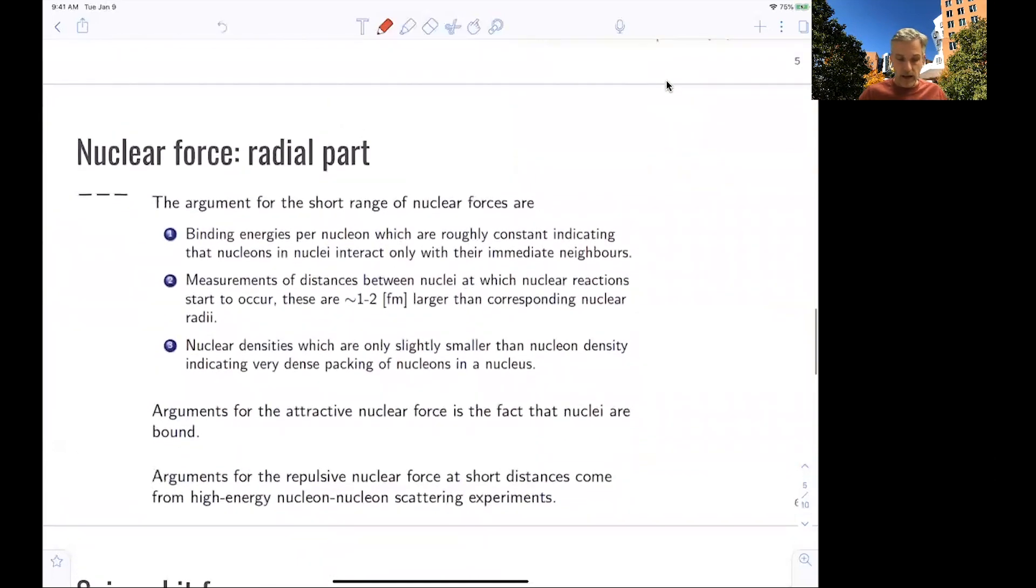On the other hand, you saw that there's short range distance. In fact, because we find this linearity with the mass number in the binding energies. So here are the arguments. The binding energies per nucleon, which is roughly constant, indicates that the nucleons in nuclei interact only with their immediate neighbors. Otherwise, you could have an A squared term or an A times A minus 1 term in there.